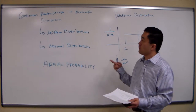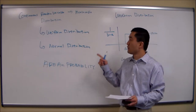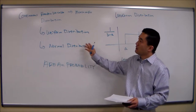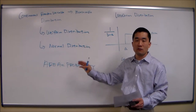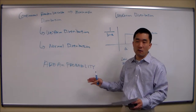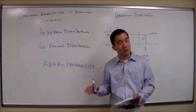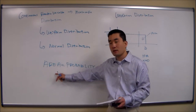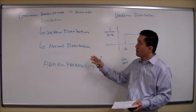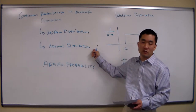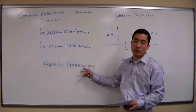In the continuous world, there's a whole bunch of distributions. In this class, we'll focus on two of them: uniform distribution and the normal distribution. The key thing to remember about continuous distribution is that we find the area underneath the curve of the graph. It involves a little bit of calculus, but finding the area turns out to be exactly the same as probability. We'll find the area underneath the curve for both uniform and normal distribution, and once we find the area, that's equal to probability.